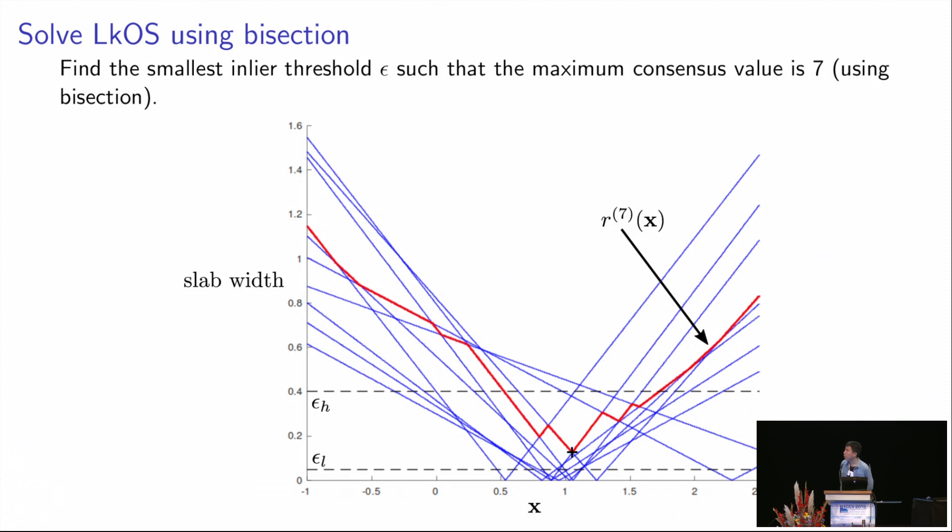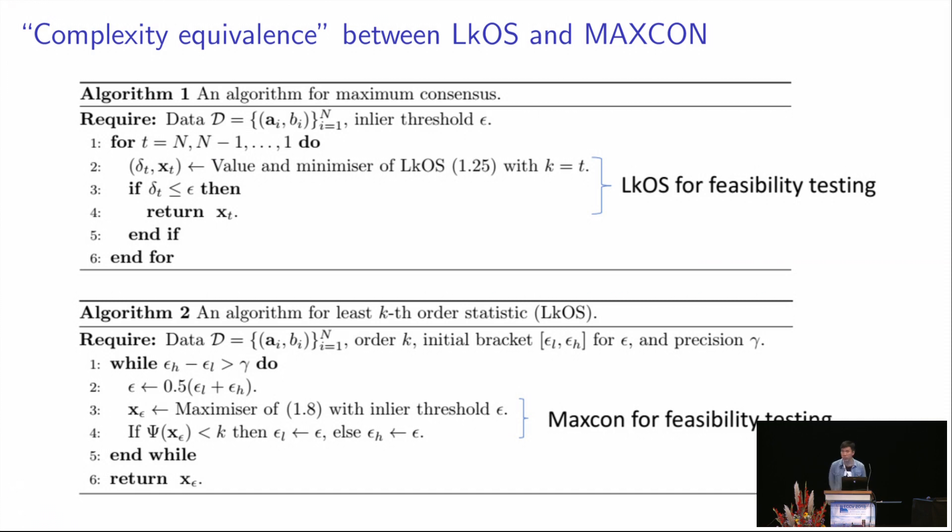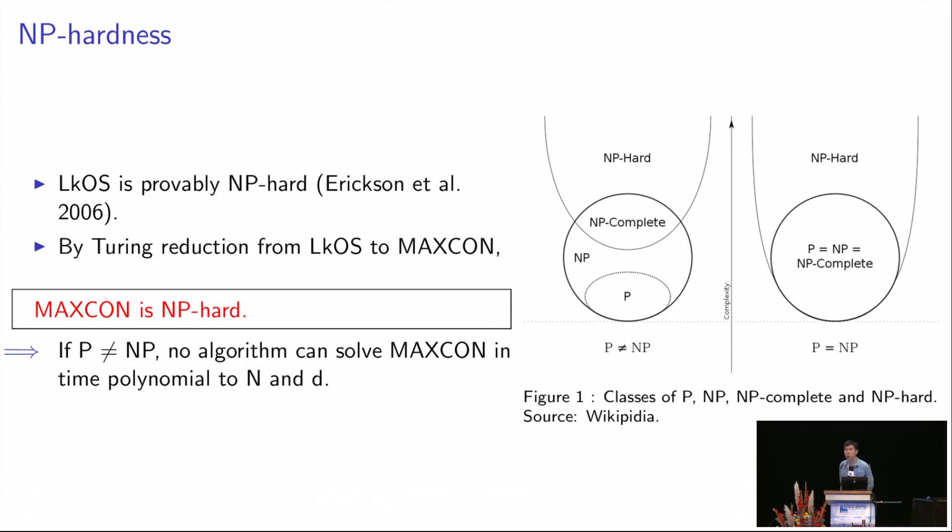And on the other hand, if we can solve the MAXCON problem in polynomial time, we can also solve the LKOS problem in polynomial time by doing bisection over the inlier threshold epsilon and find the smallest epsilon such that the maximum consensus value is exactly the k value in the LKOS problem, which is 7 here. So this kind of complexity equivalence tells us that if one of these two problems is NP-hard, the other one must also be NP-hard. And since Erickson et al. shows that LKOS problem is NP-hard, we also know that MAXCON is NP-hard. And this tells us that MAXCON cannot be solved in polynomial time if P is not NP.